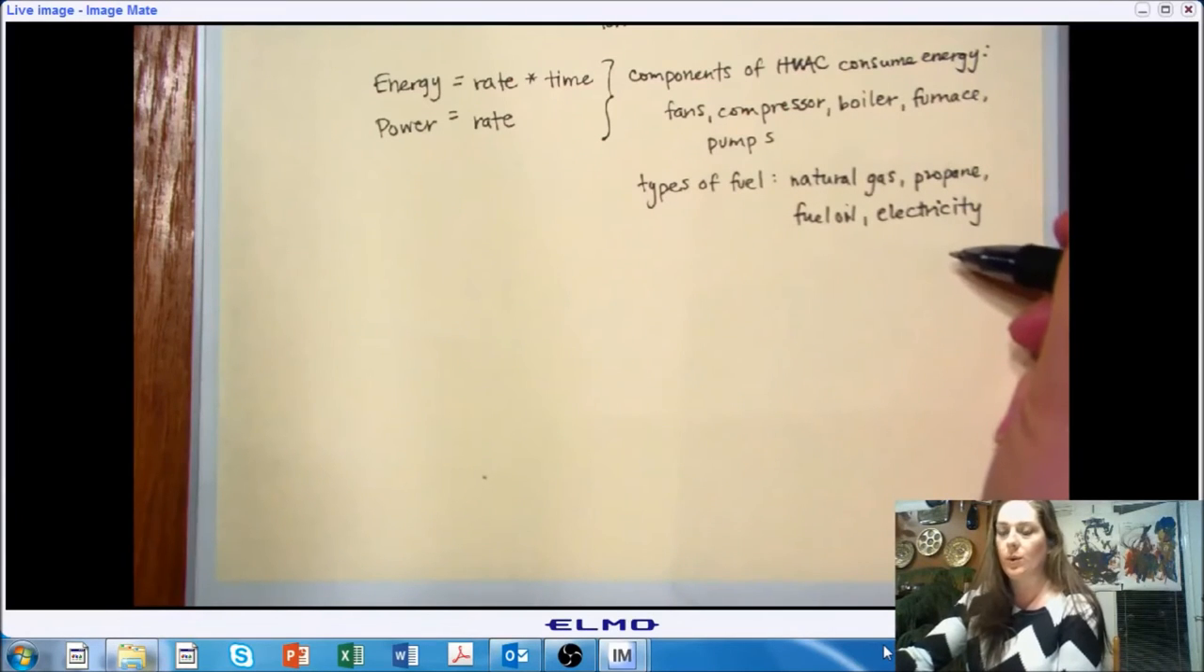And all of those are going to be reliant on some type of fuel. So the common types of fuel that we see in HVAC systems actually have quite a bit of variability. So it could be natural gas, propane, fuel oil, or electricity. And there are many systems out there that use alternative fuels as well. But these are going to be the common ones that we're going to run across in the designs we're interested in.